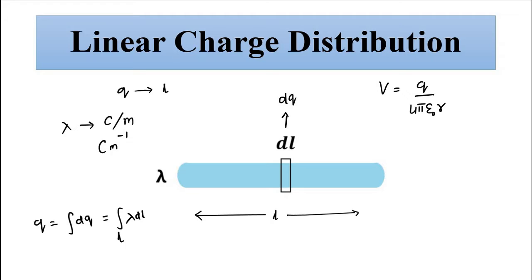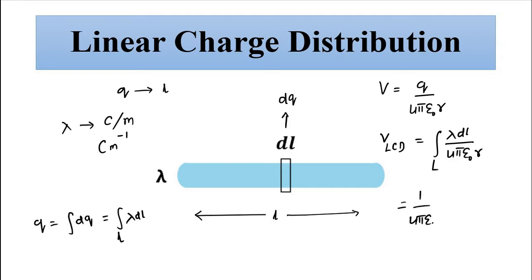The electric potential due to a linear charge distribution is expressed as the integral over length L of lambda dl by 4 pi epsilon 0 r, which can be rewritten as 1 by 4 pi epsilon 0 times the integral of lambda dl by r over the total length L. This is the electric potential due to a linear charge distribution.